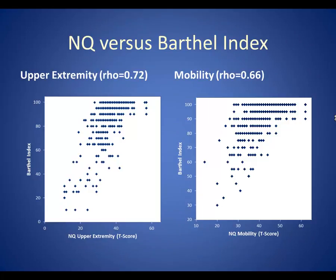This graph shows convergent validity of the two Neuroqual adult physical function measures in terms of their correlations with the Barthel Index. The Barthel is a measure of basic mobility and self-care activities of daily living.